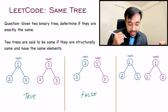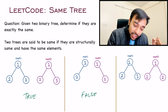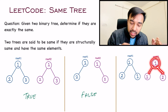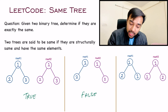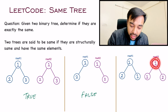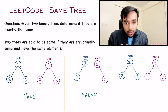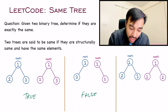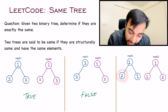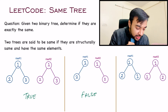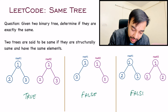Now let us look at our third test case. In this test case, you can see that the structure is the same — a root and then a left and then a right. The elements are also the same: one, two, and one. But the position of these elements are not exactly the same. You can see that the root of the left subtree is two in the first tree, and in the second tree, the root of the left subtree is one. And hence, in this test case also, you need to return false as your answer.